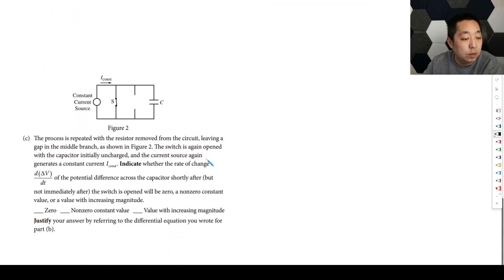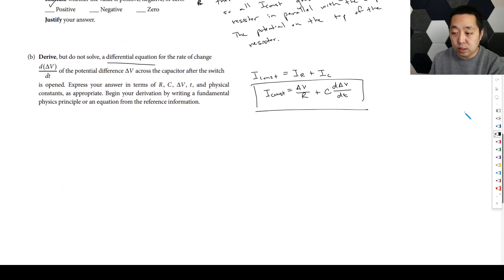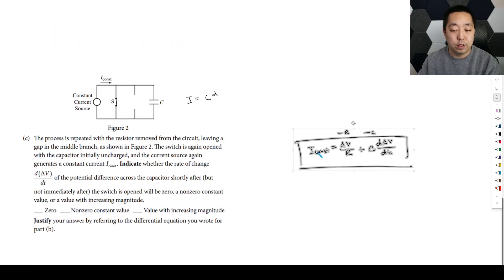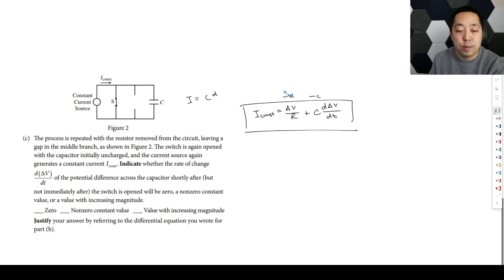So then the process repeated with resistor removed from the circuit, leaving a gap in the middle branch. And the capacitor initially uncharged, the current source again drains a constant current I const. Indicate whether the rate of change of the potential difference across the capacitor shortly after but not immediately after the switch is open will be zero, non-zero constant, or a non-constant value, or a value with increasing magnitude. Okay, so they're asking you about the C dV/dt. So let's look at our differential equation.